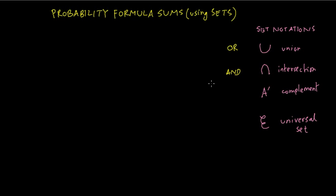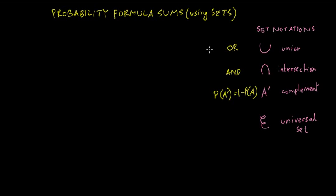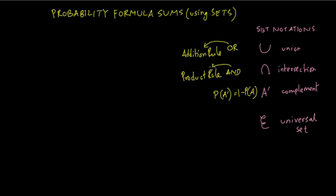The complement of a set in probability is: probability of A prime equals 1 minus probability of A. The 'and' rule means probability product. The 'or' rule means probability addition, also referred to as the addition rule. The 'and' rule refers to the product rule. You do not have to understand the story behind it — all you need is a set formula and that's it.